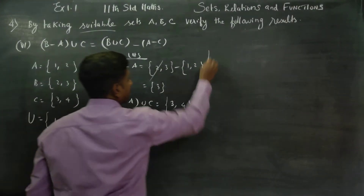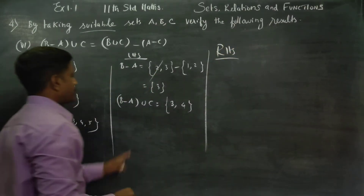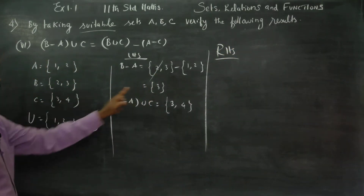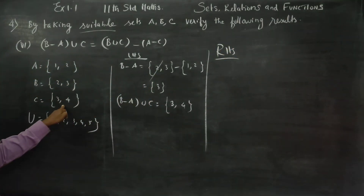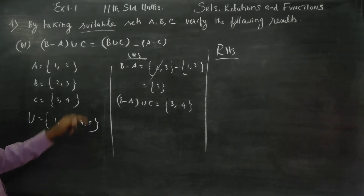Then entering into RHS. The union result is {2, 3, 4}. The B minus A answer with C gives the LHS result.